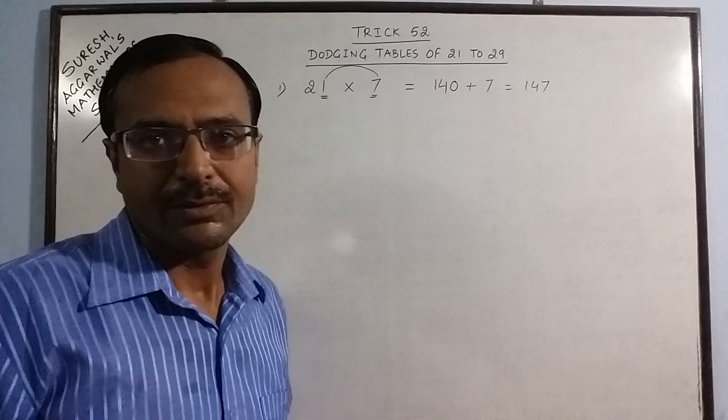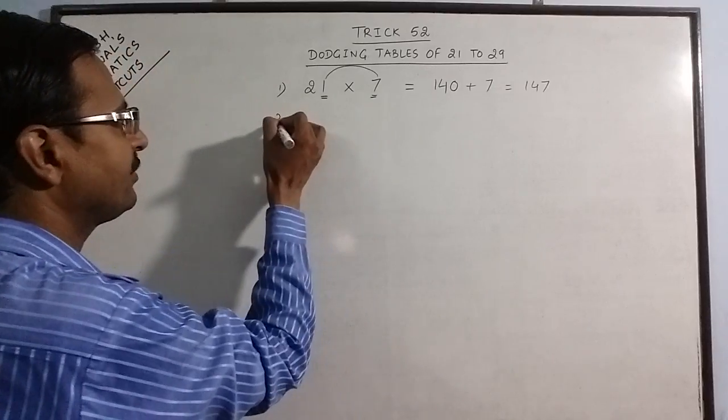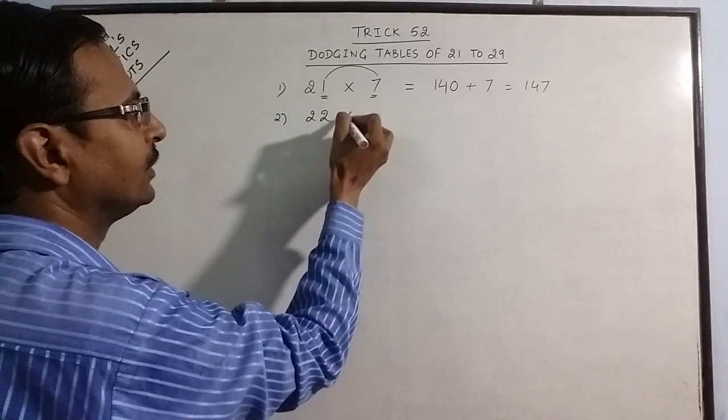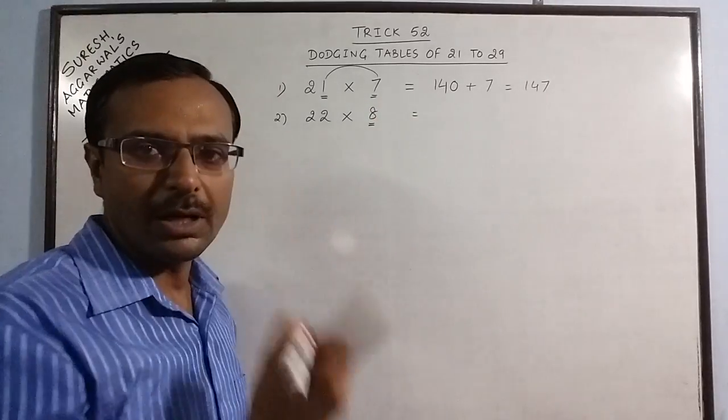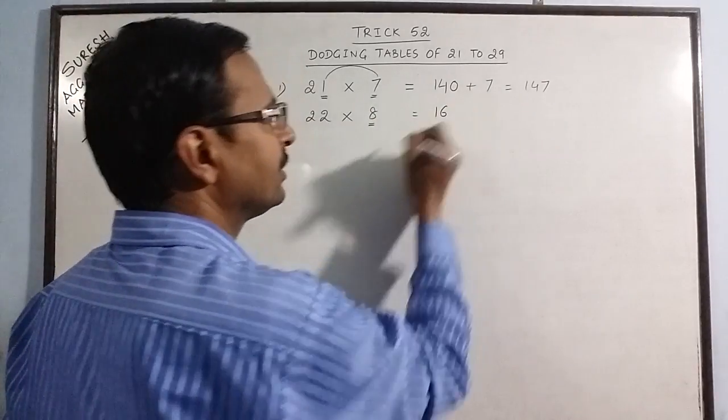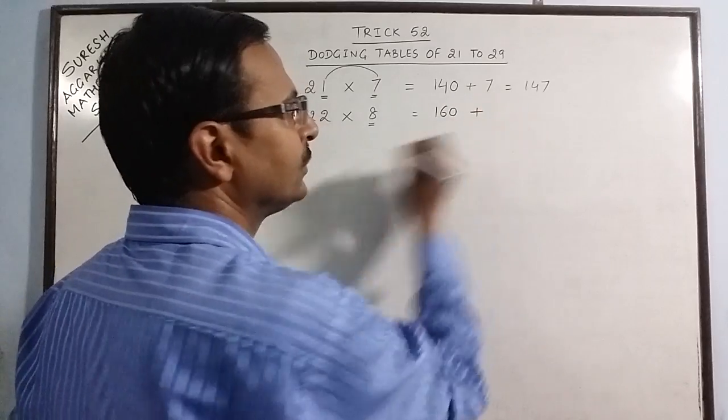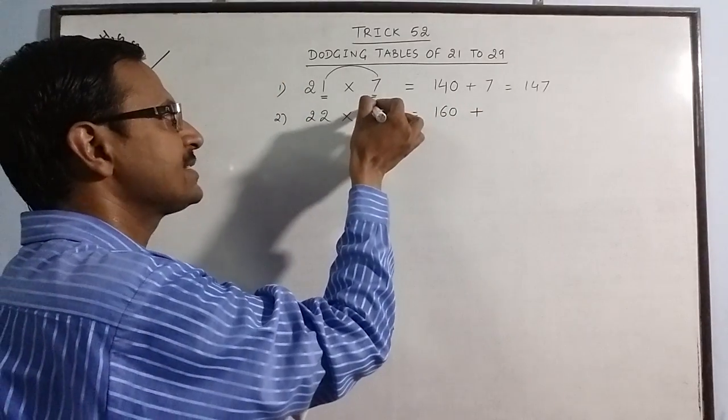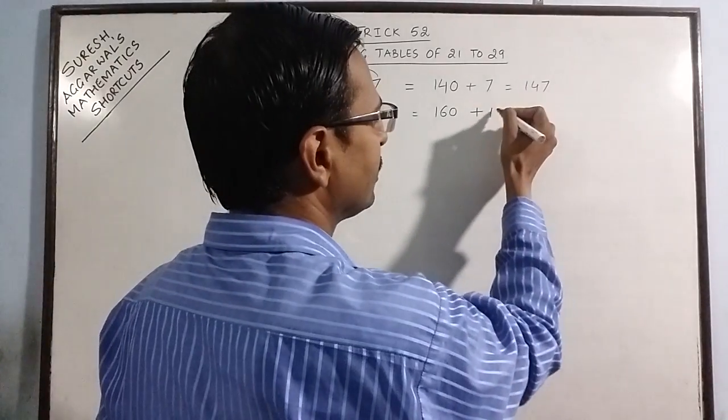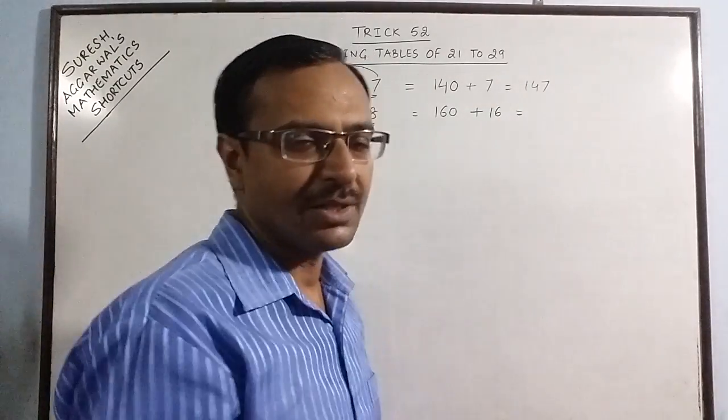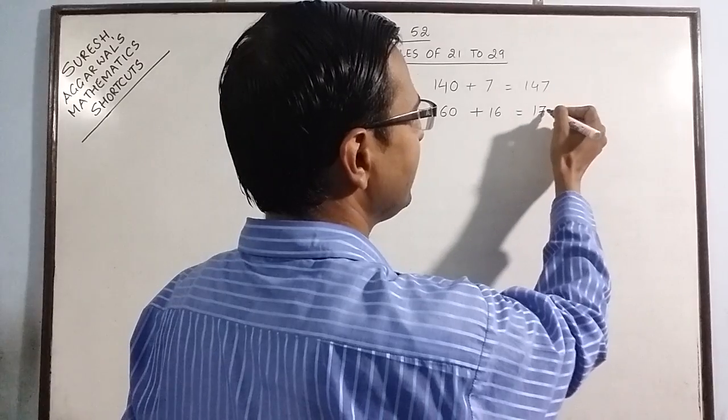Let us do some more products through this method. Suppose we have 22 into 8. Now what I told you - in the first step this number is to be doubled: 16, put a 0. And multiply this number with the units place, so 8×2 is 16. So 160 plus 16 is 176.